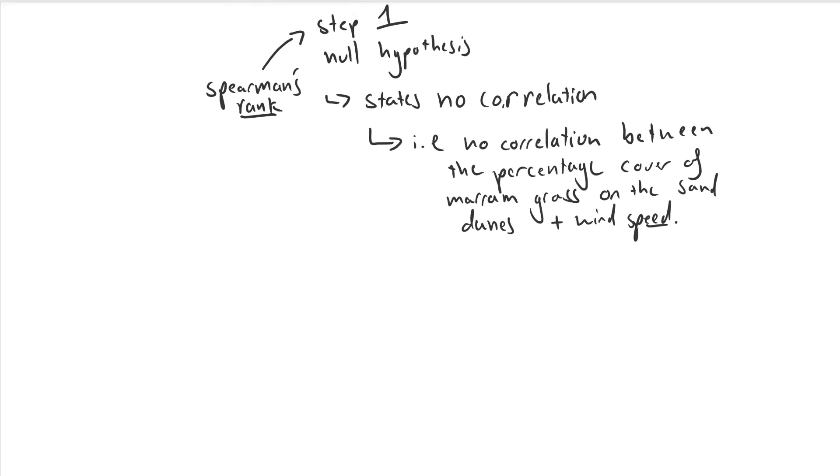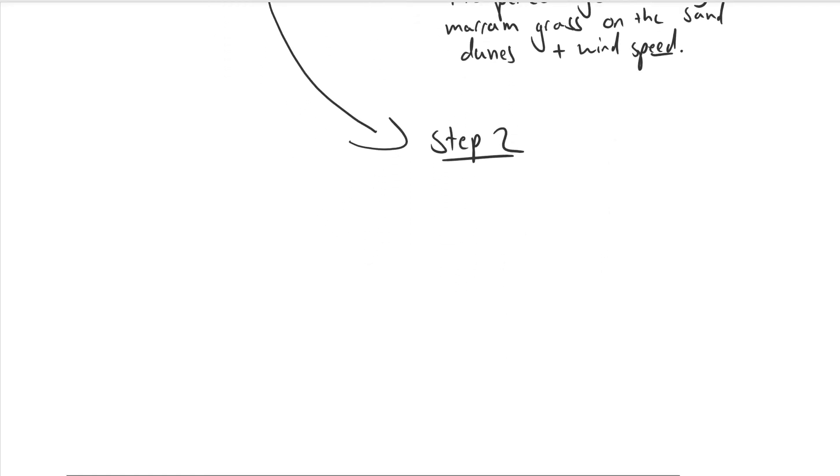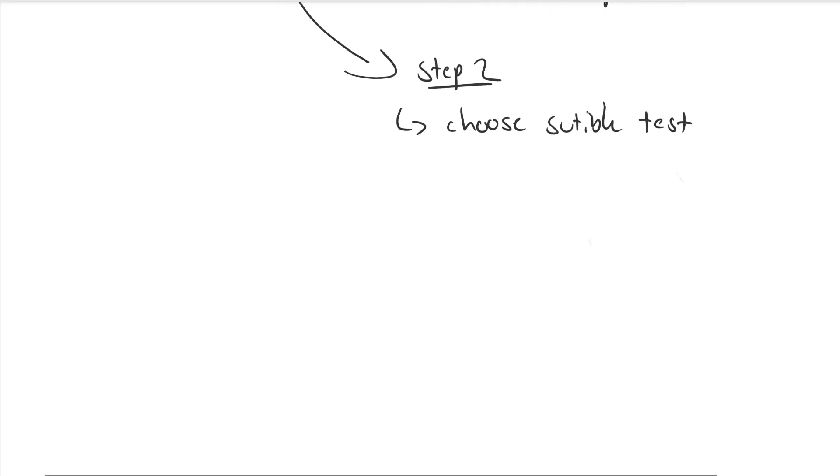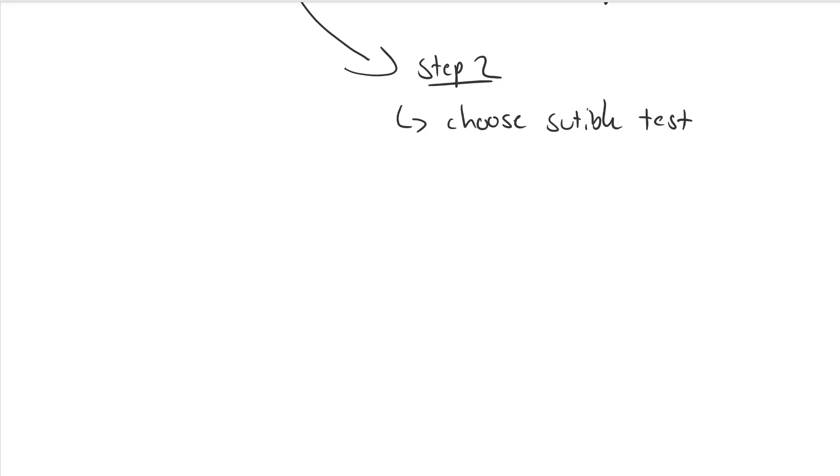So now we've got a null hypothesis we can do step two which is choose the correct statistical test. In this case we know it's going to be Spearman's Rank but we need to know why it's Spearman's Rank. As we're looking for a correlation between these two variables we're going to use Spearman's Rank because it's a test for correlation.